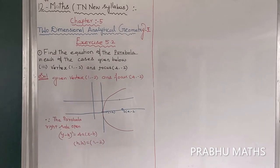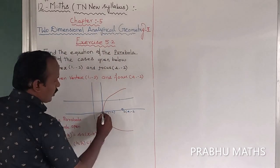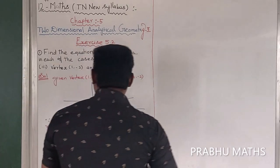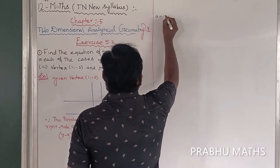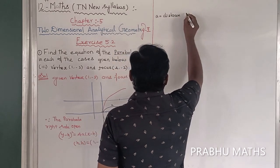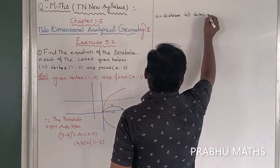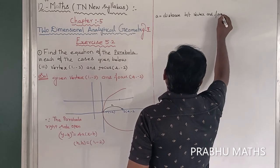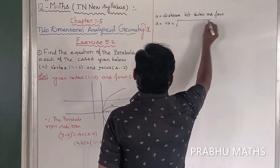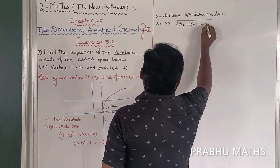Next, find out the value of a. Here, a is the distance from focus to vertex. So a equals the distance between vertex and focus, calculated as: a = √((x₂ - x₁)² + (y₂ - y₁)²).